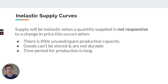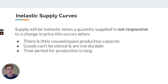So the factors are: if there is no spare capacity or little spare capacity. Basically what this means is they can't get access to the resources — the labor, the land, or the capital — to produce. Maybe in the industry, everyone's producing 24 hours a day and everyone that has the skills and knowledge is already employed, so it's really hard to just produce more. That's what capacity means.